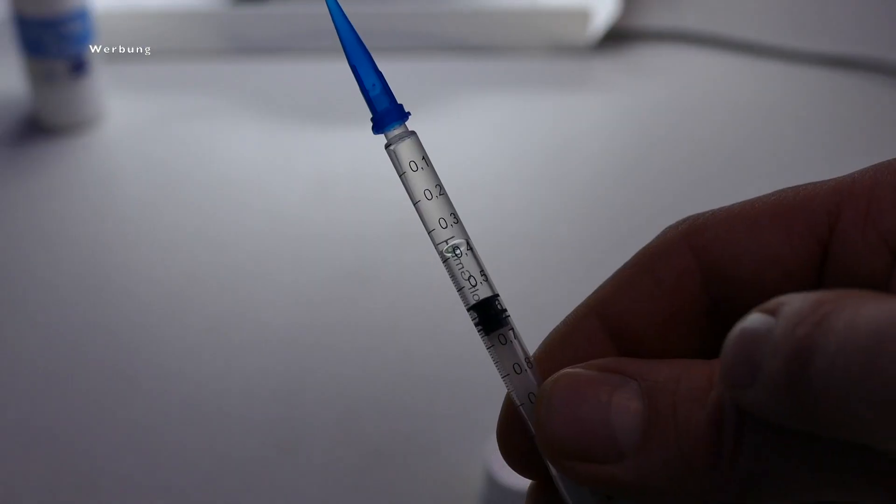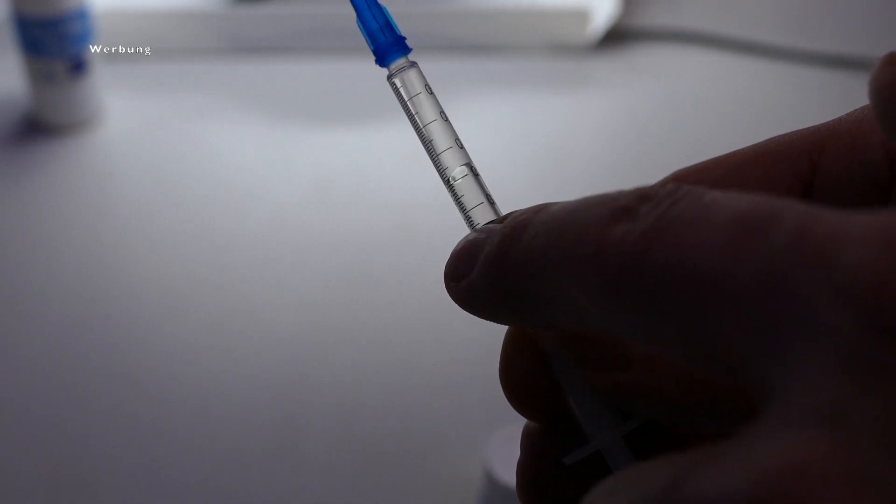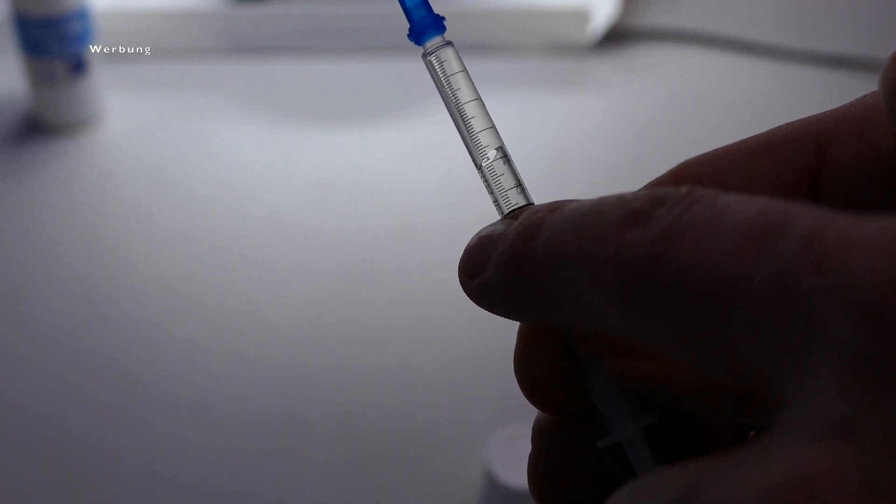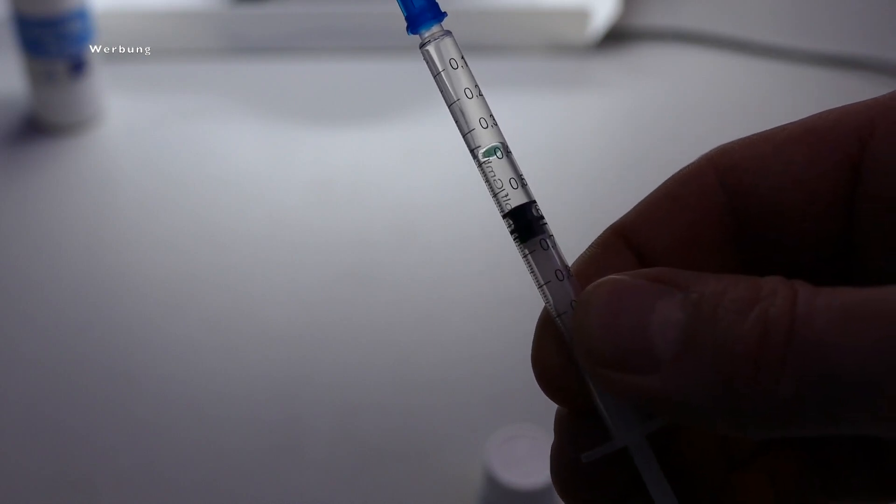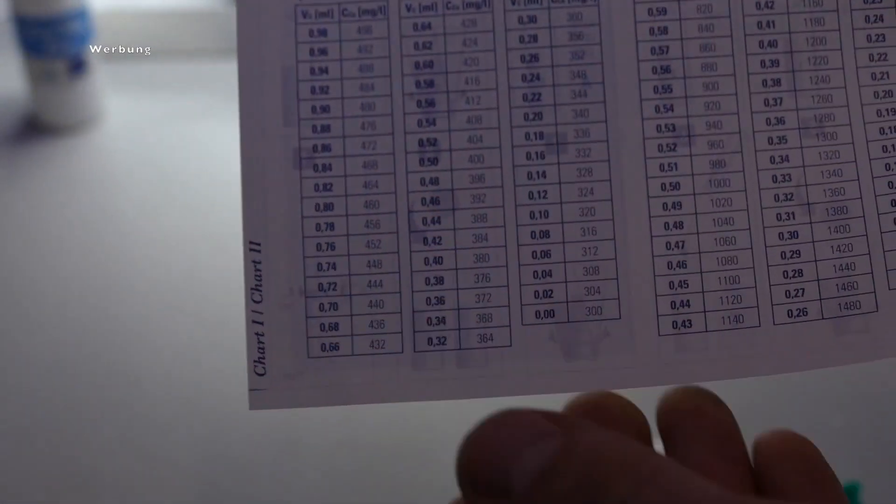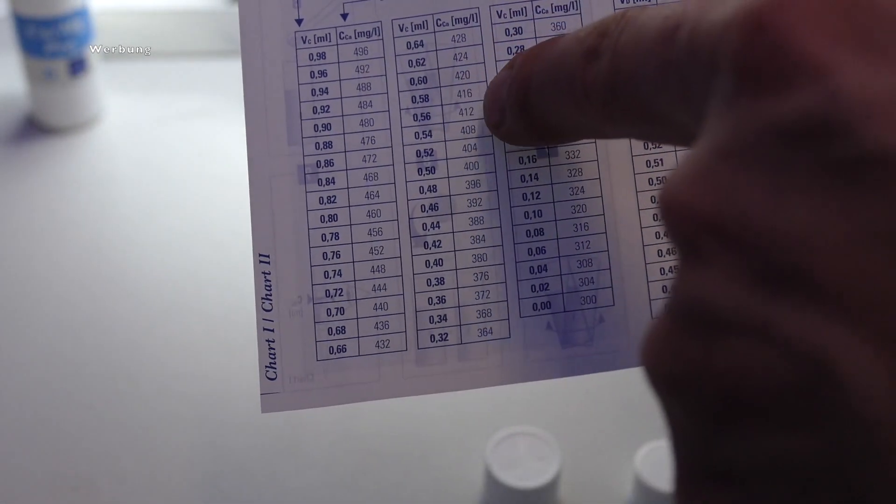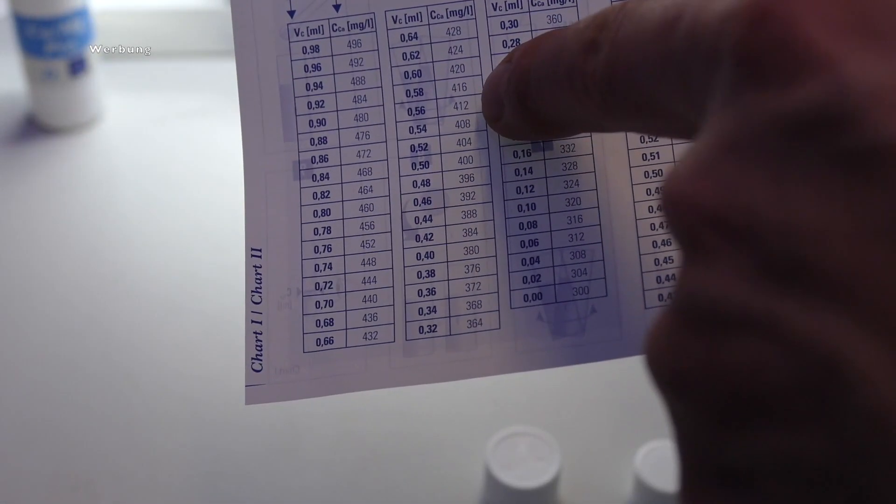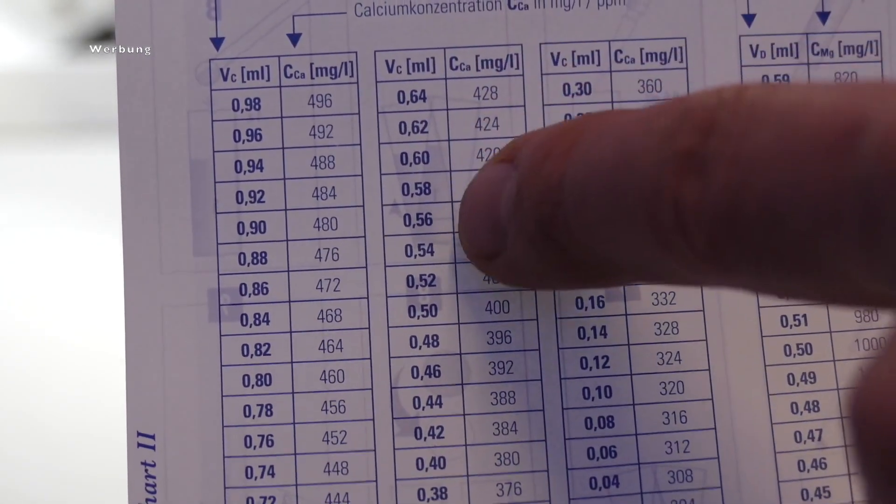So we come to the evaluation and see what our calcium level says. So as we have learned, as soon as the sample becomes colorless, the remaining amount of test reagent in the syringe is then read off. Remember where we read, on the black edge of the plunger. And with this amount you have, you can then look up in your chart what your calcium level is. Well, in my case, I now have a value of 412 milligrams per liter, which is in itself quite good.